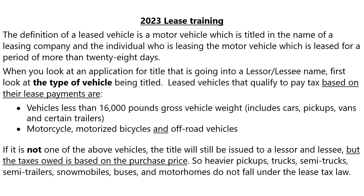When you look at an application for title that is going into a lessor or leasing name, first look at the type of vehicle being titled. Leased vehicles that qualify to pay tax based on their payments are vehicles that are less than 16,000 pounds gross vehicle weight — that includes cars, pickups, vans, certain trailers, motorcycles, motorized bicycles, and off-road vehicles.